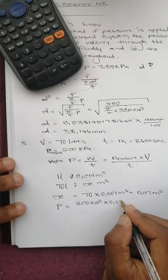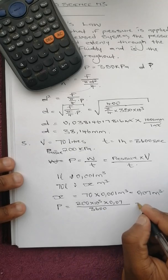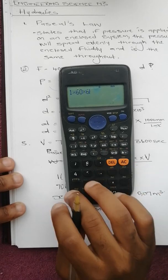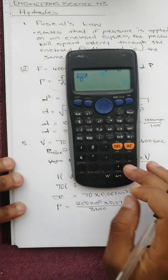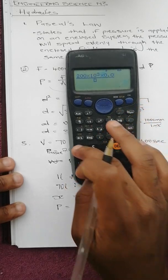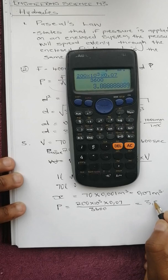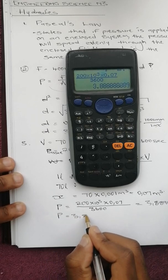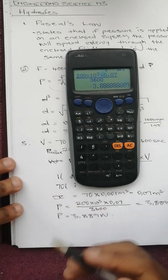Therefore the power P will be 200 times 10 to the power 3 times 0.07 over 3600 seconds. We punch that into the calculator: 200 times 10 to the power 3 times 0.07 over 3600.